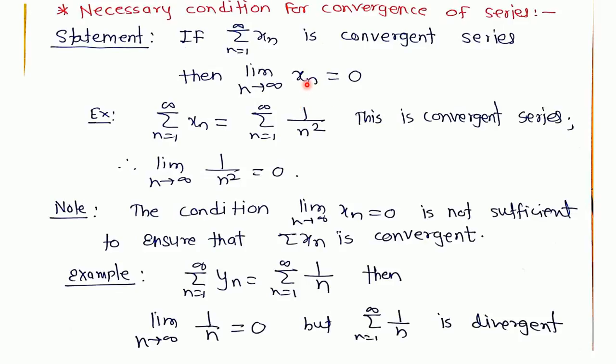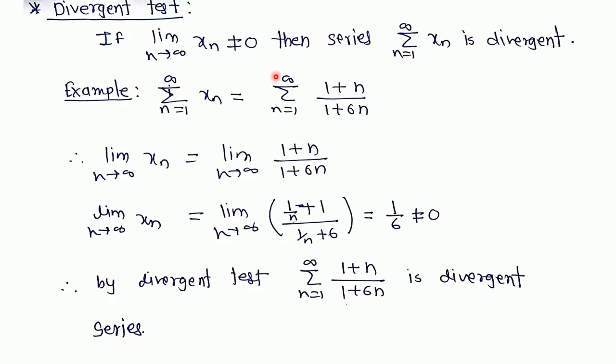That is, if this condition is satisfied, then two cases arise: either the series is convergent or the series is divergent. But if the limit of the nth term of the series is not equal to 0, then the series is divergent, which is very useful for checking the divergence of the series.